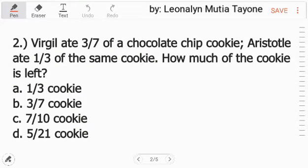Number 2. Virgil ate 3/7 of a chocolate chip cookie. Aristotle ate 1/3 of the same cookie. How much of the cookie is left? First, find how much of the cookie was eaten by adding them, 3 over 7 plus 1 third.